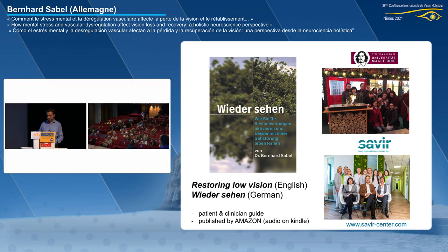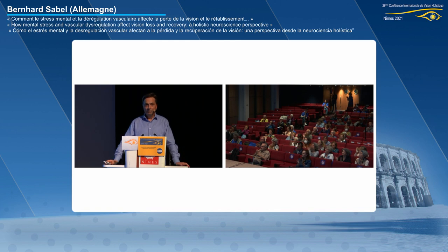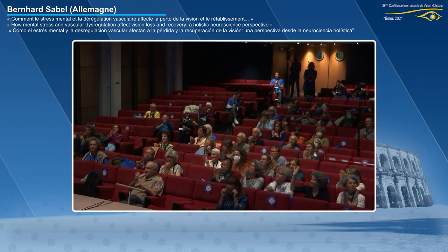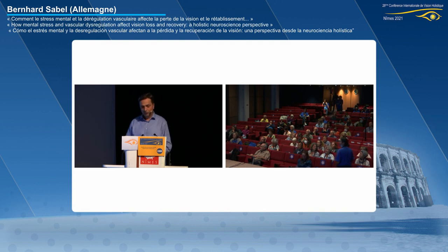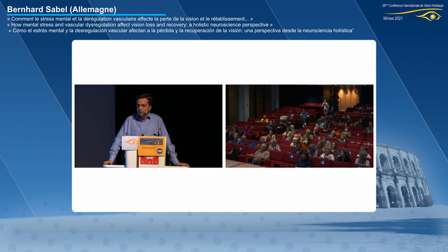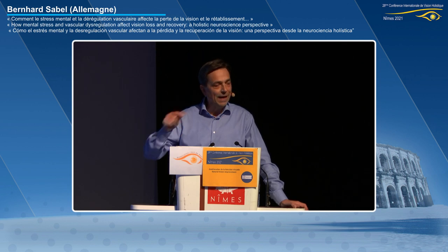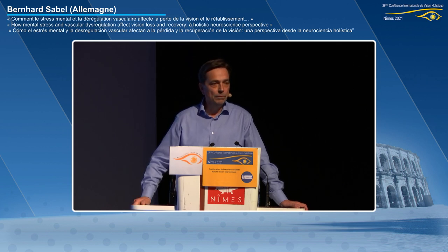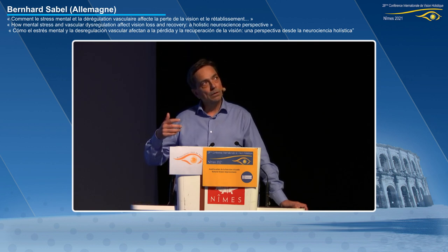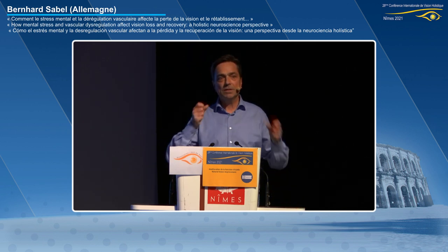Question: Do you treat retinitis pigmentosa (RP) as well? Yes, we treat RP. What we find is it doesn't matter what the ophthalmological disease is — most will respond because the underlying mechanism is stress. If there is a fundamental mechanism of stress and vascular problems, it is present in all different types of diseases. The best effects we see are on macular degeneration, glaucoma, and also RP. Most often, fogginess goes away because fogginess is a lack of blood regulation.